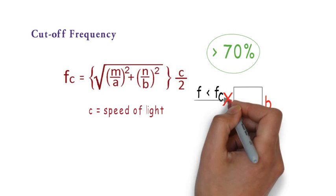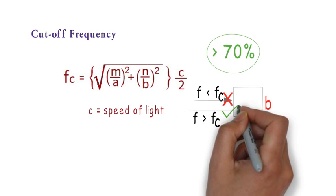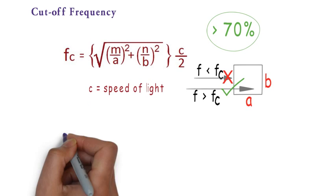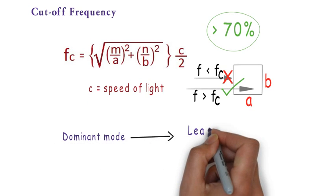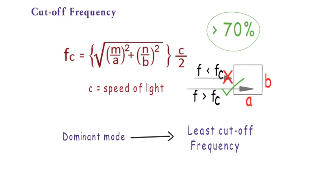Cutoff frequency is a frequency below which waveguide does not allow the wave to pass through. The mode which have least value of cutoff frequency is called dominant mode because it allows maximum number of frequencies.